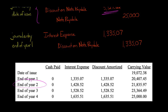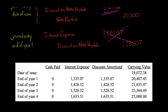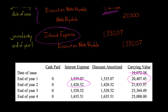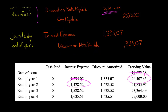At the end of year two, we make another journal entry — debit interest expense, credit discount on note payable, but for a different amount. We take $20,407.45 and multiply it by 7%, the implicit interest rate, giving us $1,428.52. We debit interest expense and credit discount on note payable for that amount. Adding that to the previous carrying value, we end up with an ending carrying value of $21,835.97.